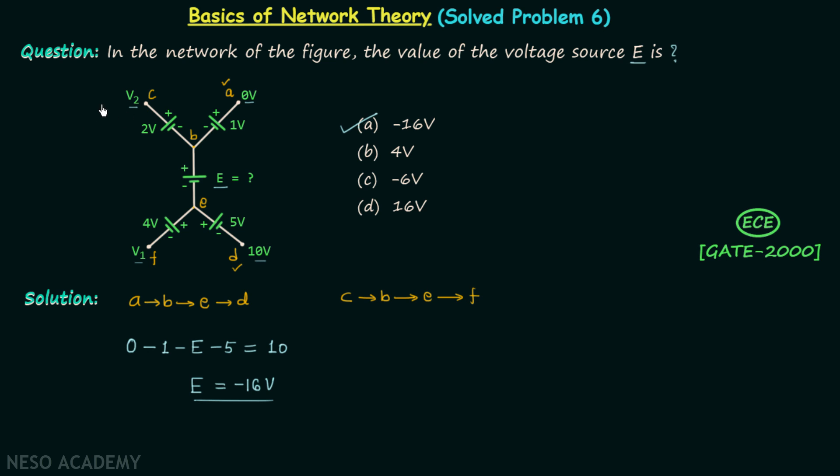At C, the potential is equal to V2, so we have V2. Then we have minus 2, minus 2. After this we have minus E. Moving forward, we have minus 4.